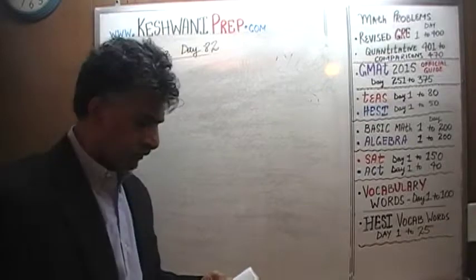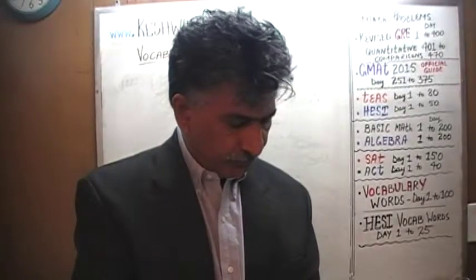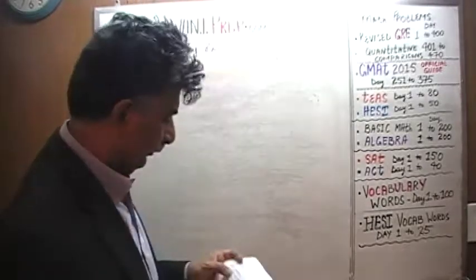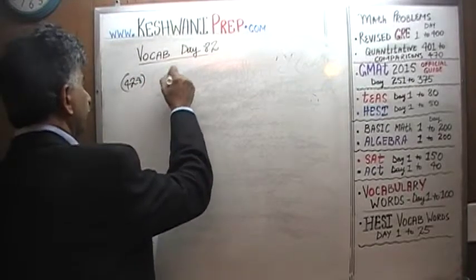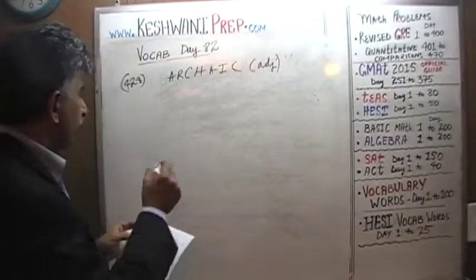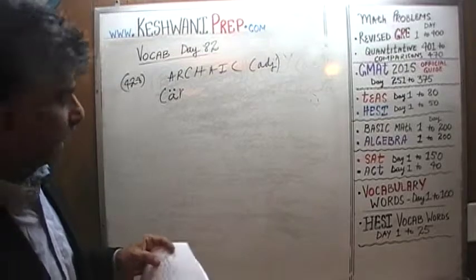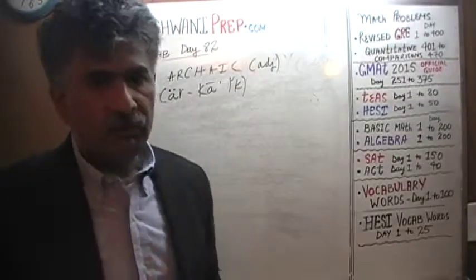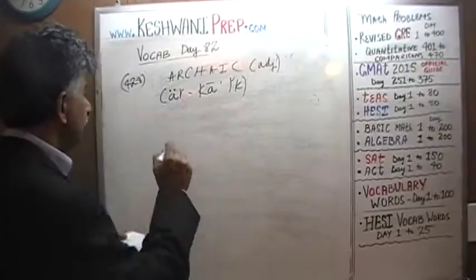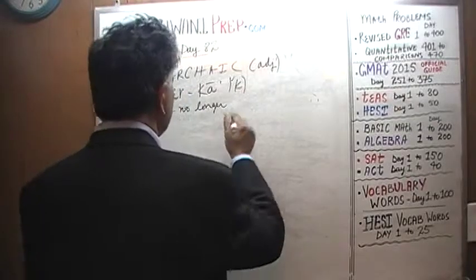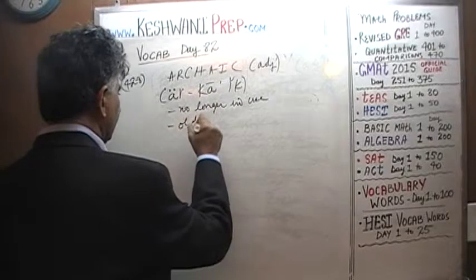Let's get going. The first two or three words we're going to learn today — as a matter of fact, all the words we're going to learn today — have to do with being old, being out of date, being obsolete, no longer in use. Let's look at the first word, number 428. The word is an adjective, pronounced 'archaic.' It means something that is no longer in use, something that is old-fashioned, something that is ancient, something that is out of date.